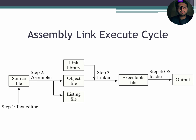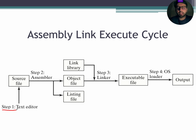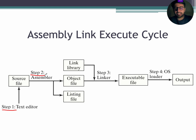In step 1, a programmer uses a text editor to create a source file. The extension of the source file is .asm. The source file consists of the program's source code. In step 2, the assembler reads the source file and produces an object file.